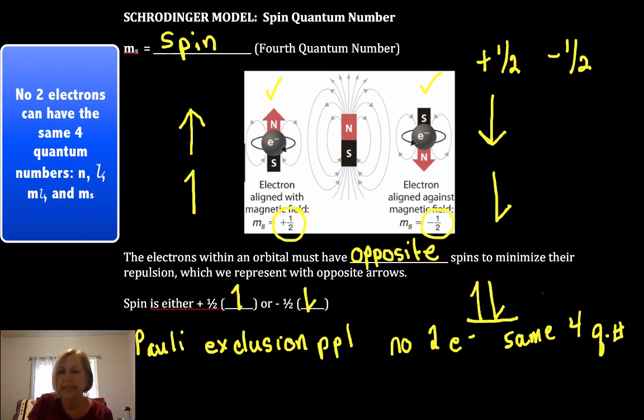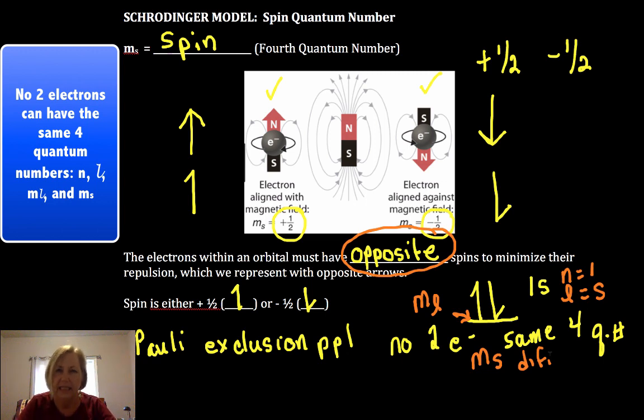So for example, if this was a 1s orbital, both electrons would have n equals one, both electrons would have l equals to an s, and both electrons are in the same orbital so they have the same m sub l, but we can meet the Pauli exclusion principle by making sure their spins are opposite. So now that means their m sub s differs. And so that's how we maintain that exclusion principle described by Pauli.